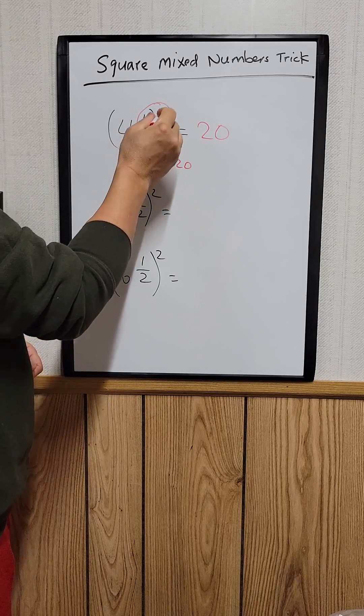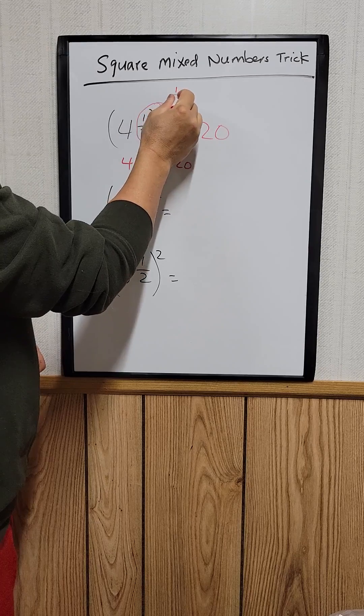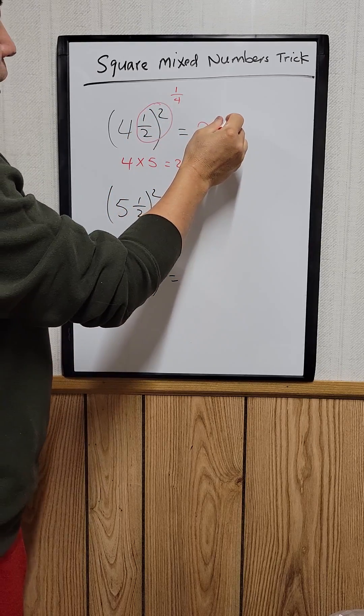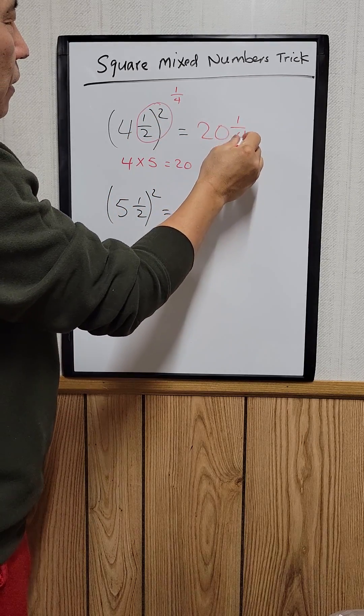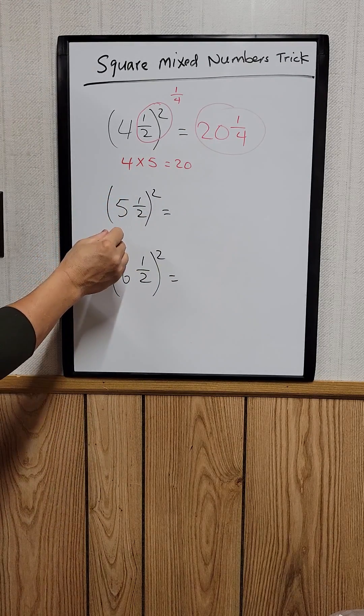If you square this, it would be one over four, and then that's the answer. Let's do the next one.